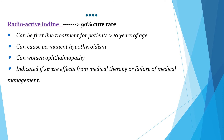High-dose prednisolone can be given for those with severe ophthalmopathy. Radioactive iodine has a cure rate of more than 90 percent and can be a first-line treatment for patients greater than 10 years of age. However, it can cause permanent hypothyroidism and sometimes worsen ophthalmopathy. It is indicated when there are severe side effects from or failure of medical management.